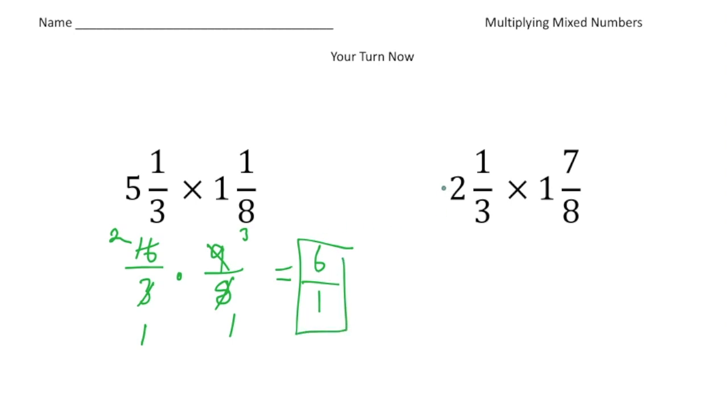Alright, the next one, 2 and 1 third times 1 and 7 eighths. So again, step one, make it a rational form for both fractions. So 2 and 1 third is going to be 7 thirds, and 1 and 7 eighths is going to be 15 eighths.